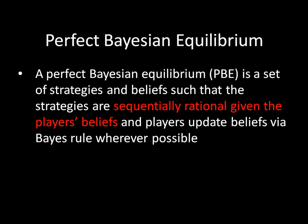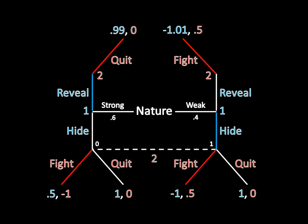Think about what that means here. In this case, Player 2 does not directly observe whether Player 1 is strong or weak. So she doesn't know directly from being at this hide move whether she's on the left side or the right side. But she can infer, based on the fact that only the weak type is supposed to be hiding in this case, that she definitely has to be in that bottom right corner.